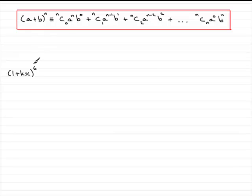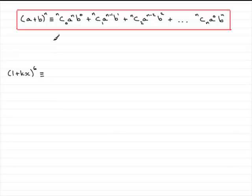When I compare this to what we've got, you can see that a is 1, b is kx, and as I said earlier, n is the power 6. So all we've got to do is simply use the formula.